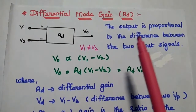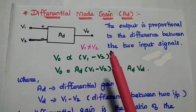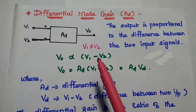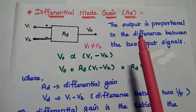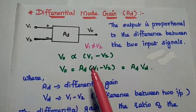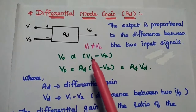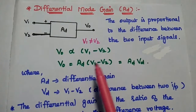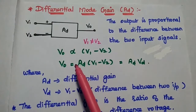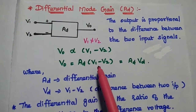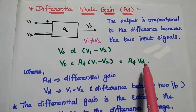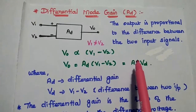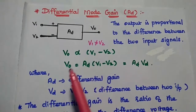The next one is differential mode gain. It is represented as AD. In differential mode, we have to ensure that V1 is not equal to V2. Then only we can get the difference between V1 and V2 at the input side. The output is proportional to the difference between the two input signals. It is represented as V0 is directly proportional to V1 minus V2.